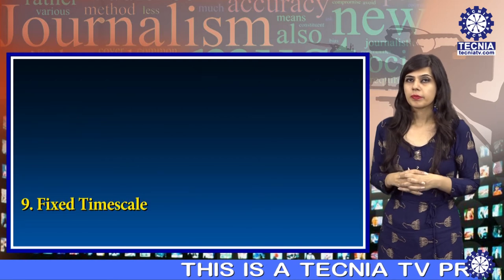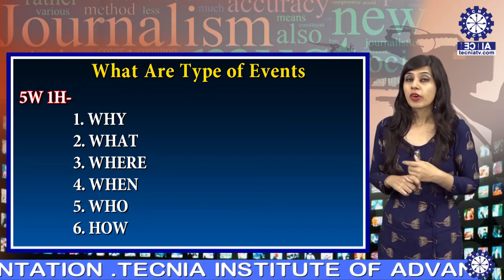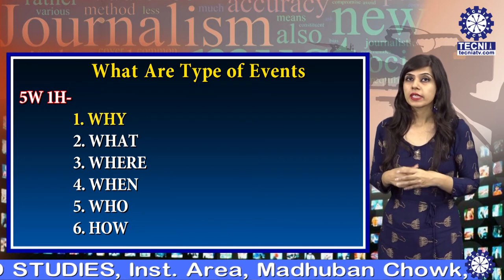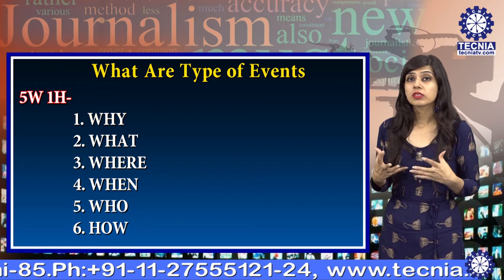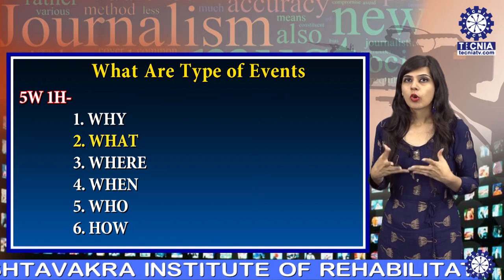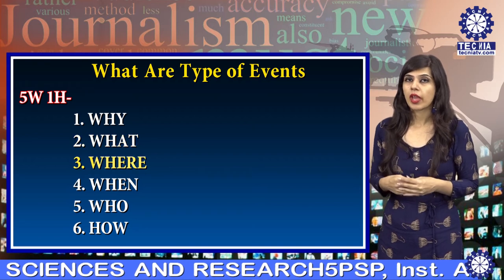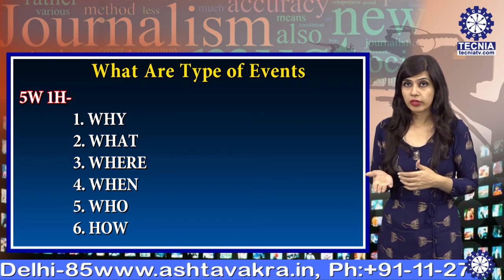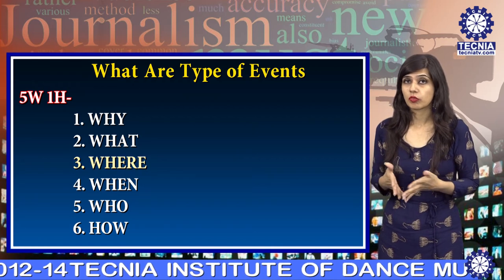Before discussing types of events, let us discuss the five W's and one H required to organize an event. The first W is Why — what is the purpose and aim of our event. The second W is What — what all is going to happen in the event. The third W is Where — what location are we choosing, whether it is an auditorium or a mall, so that the event can be successful.